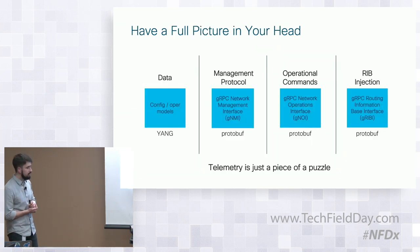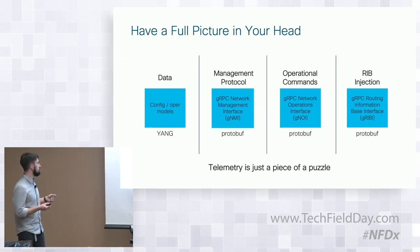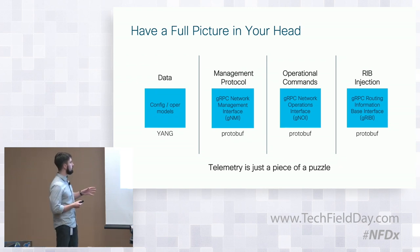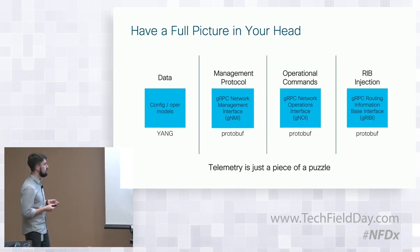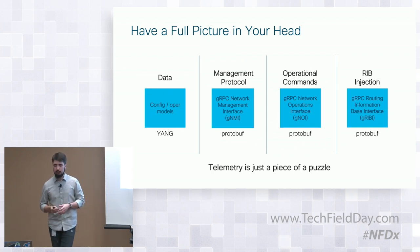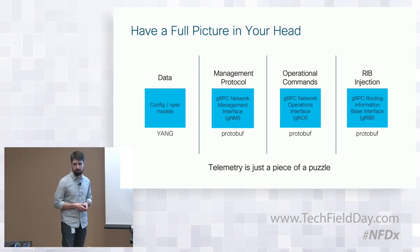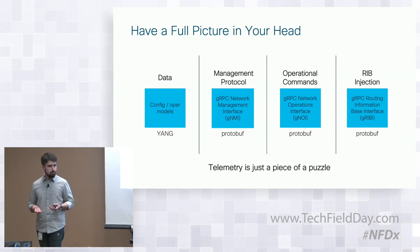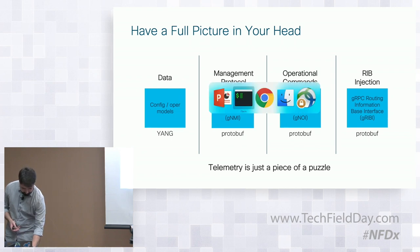Keep in mind that telemetry with GNMI is only one piece of the full picture because it's used for collecting data. We shouldn't forget about our YANG models and programmability. Another aspect is getting operational commands — Google Network Operation Interface, GNOI, was introduced to cover this. And another one is GRIBI, which is RIB injection and handling. We have our own solution called Service Layer API.